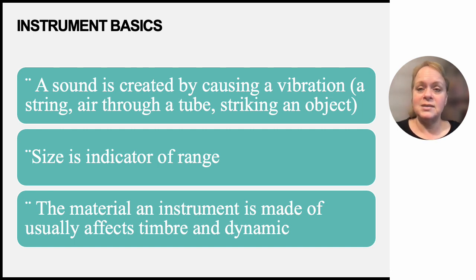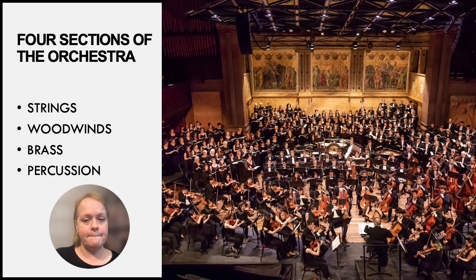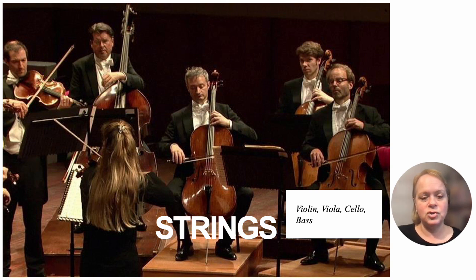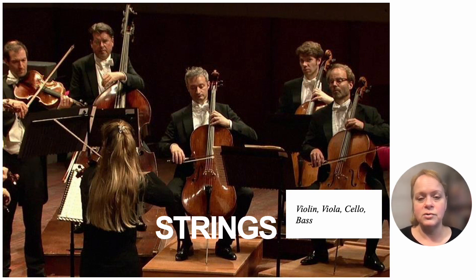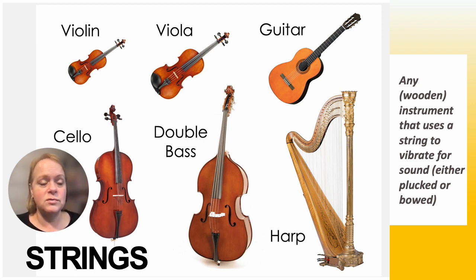This is one of the reasons some violins are very expensive — they're made from a particularly resonant type of wood. There are four sections in the orchestra: strings, woodwinds, brass, and percussion. When you go to your orchestral concert, you'll be looking for each of these different sections. String instruments in the orchestra include violin, viola, cello, and bass.